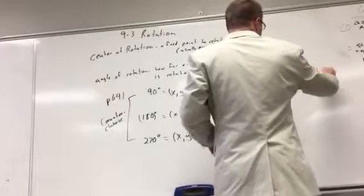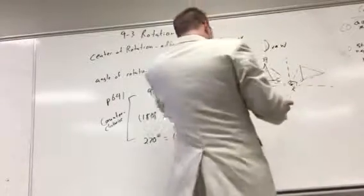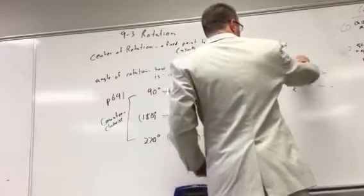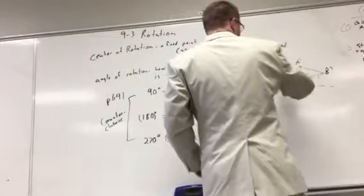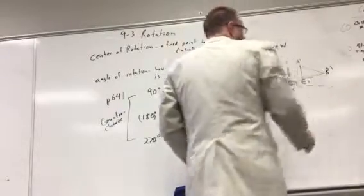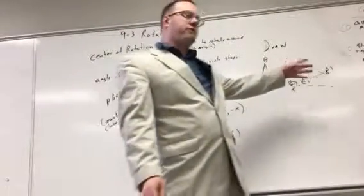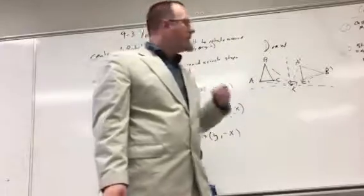Our shape then becomes this with this point being my A prime, this point being my B prime, and this point here being my C prime. I've rotated all three of those around that 90 degree axis.